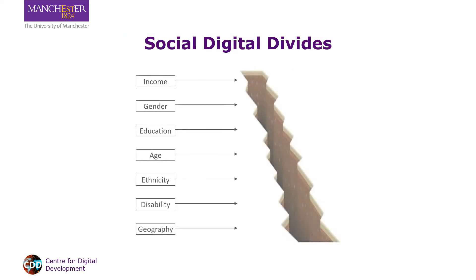We used to think of the digital divide in terms of divisions between countries, but now recognize there are multiple divisions within countries and between different groups. Income is the prime, most persistent division, meaning that the rich have ICTs and the poor do not.